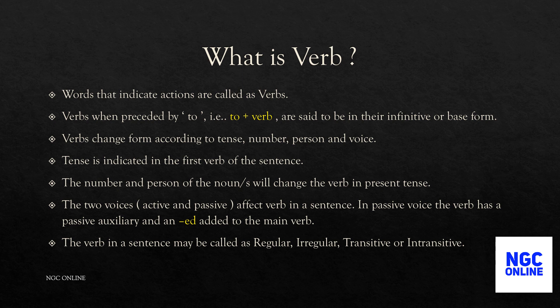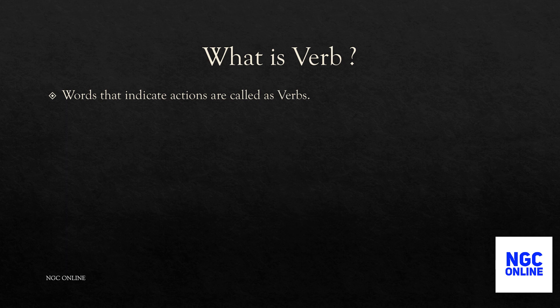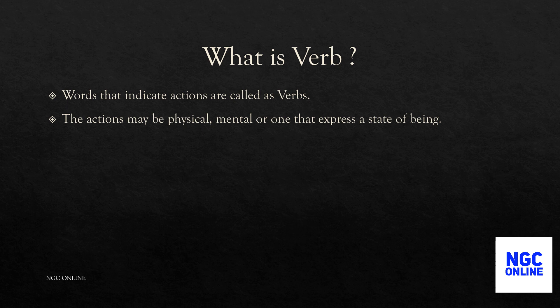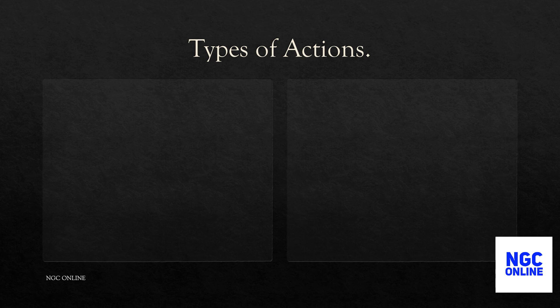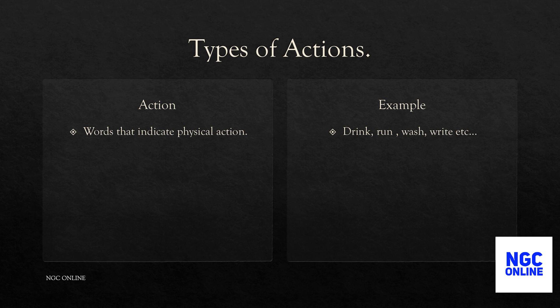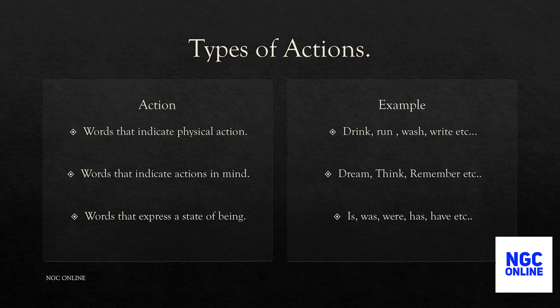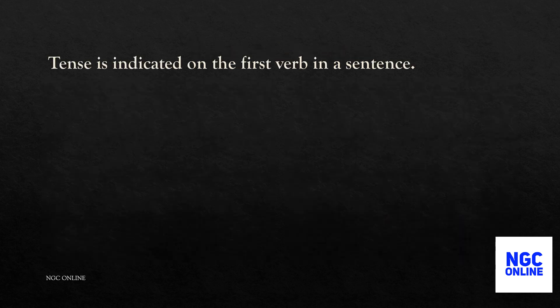The verb in a sentence may be called regular, irregular, transitive, or intransitive. Verbs are words that indicate actions. The actions may be physical, mental, or expressing a state of being. Words that indicate a physical action include: drink, run, write. Words that indicate mental action include: dream, think, remember. Words that express a state of being include: is, was, were, has, have.